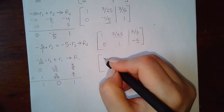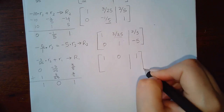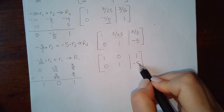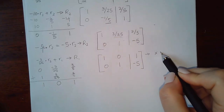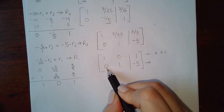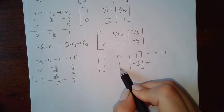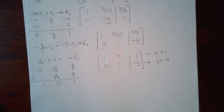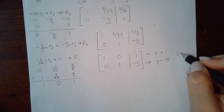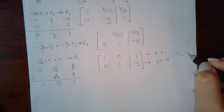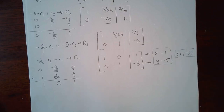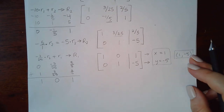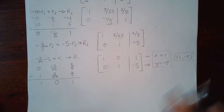5/5 is just 1, so the top row becomes [1, 0, 1] and the bottom row stays the same. Converting back to equations: 1x = 1 and 1y = -5. In point form the answer is (1, -5). That only took about four and a half minutes — a little quicker the second time because everything was already written down.